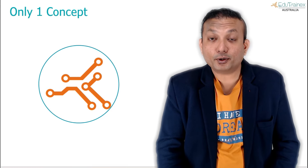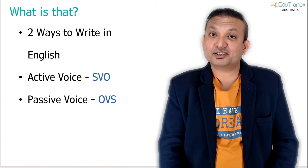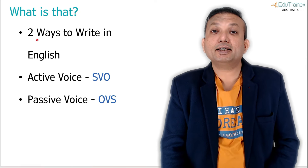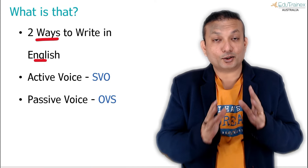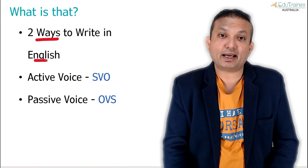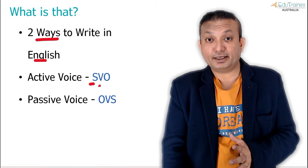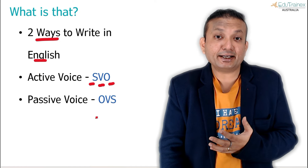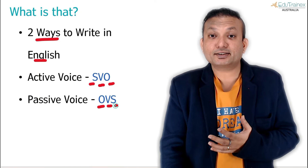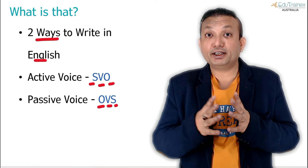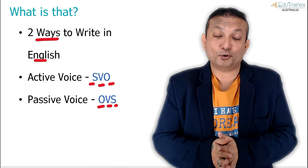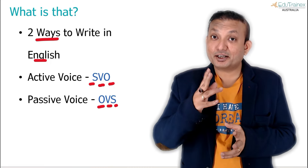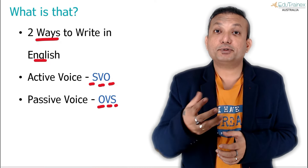The one and only concept I'm trying to tell you is how the English language is written. There are only two ways you write sentences in English: active voice and passive voice. In active voice, the subject comes first, verb in the middle, and object at the end. In passive voice — which is more scientific or formal writing — the object comes first, verb in the middle, and subject at the end. The subject is someone who is doing an action.